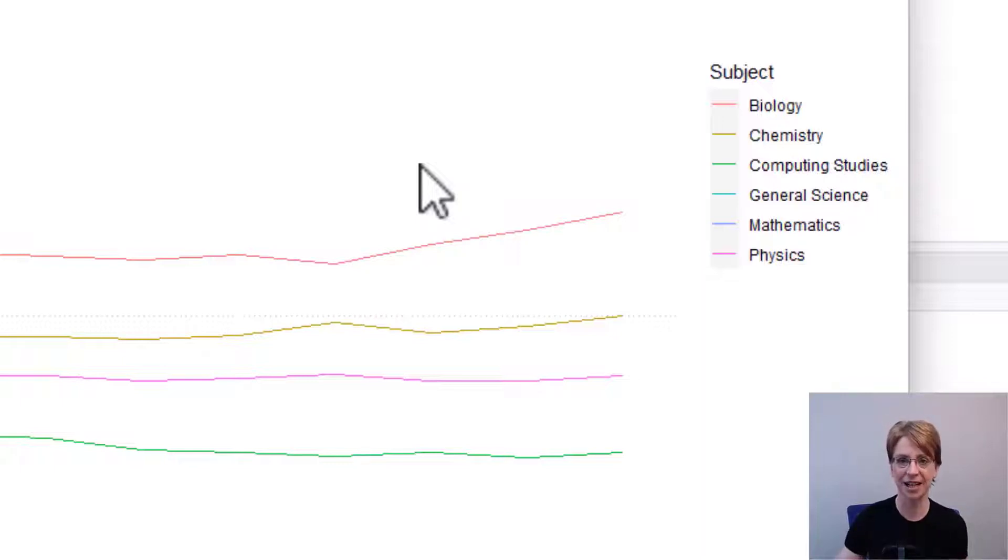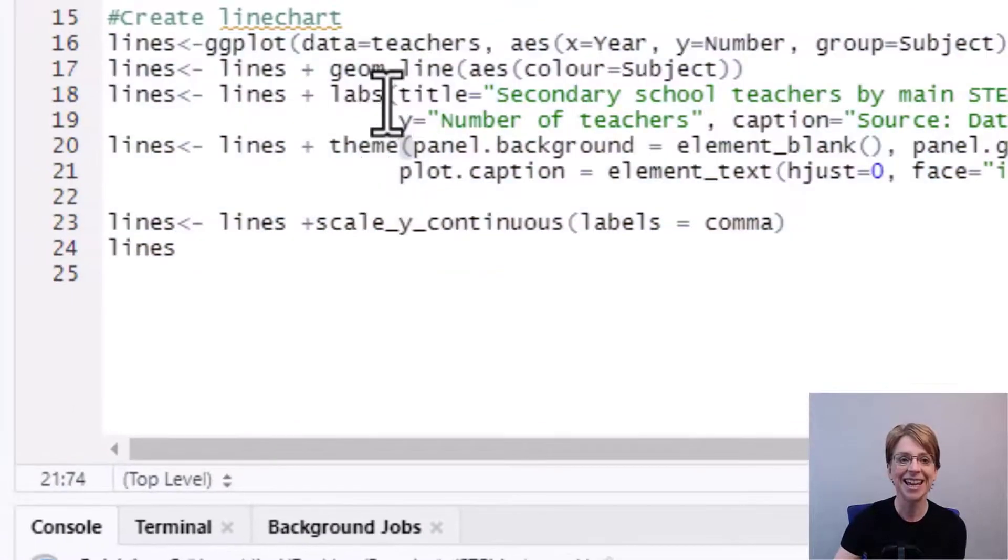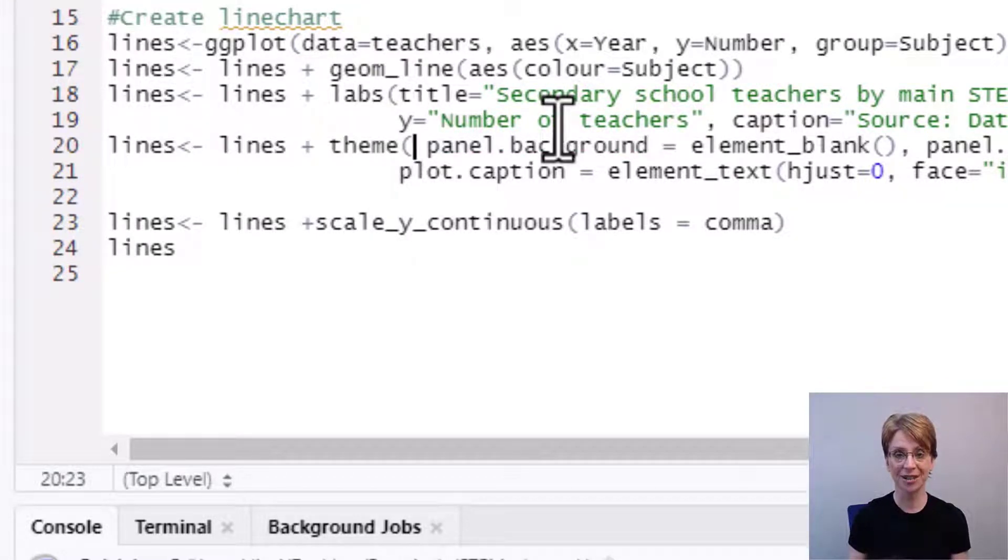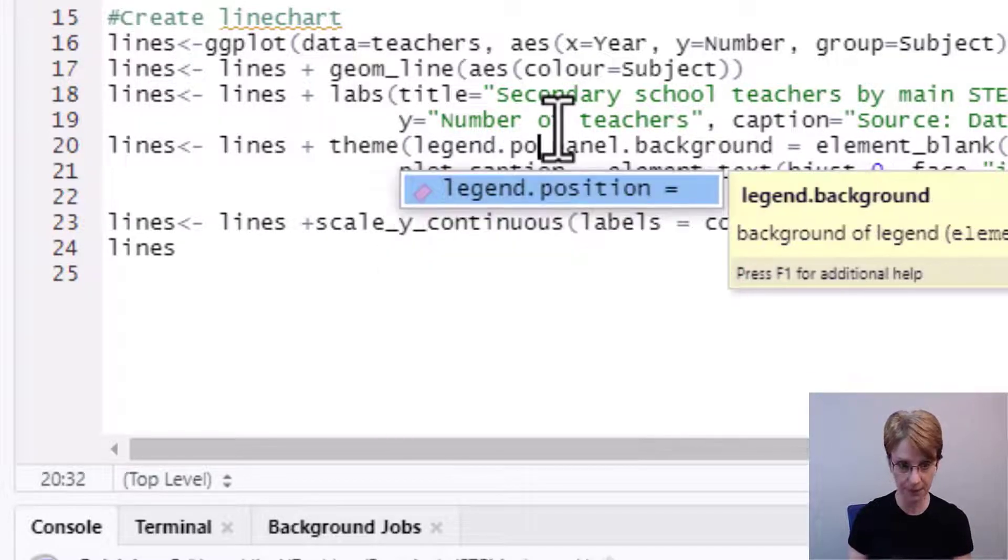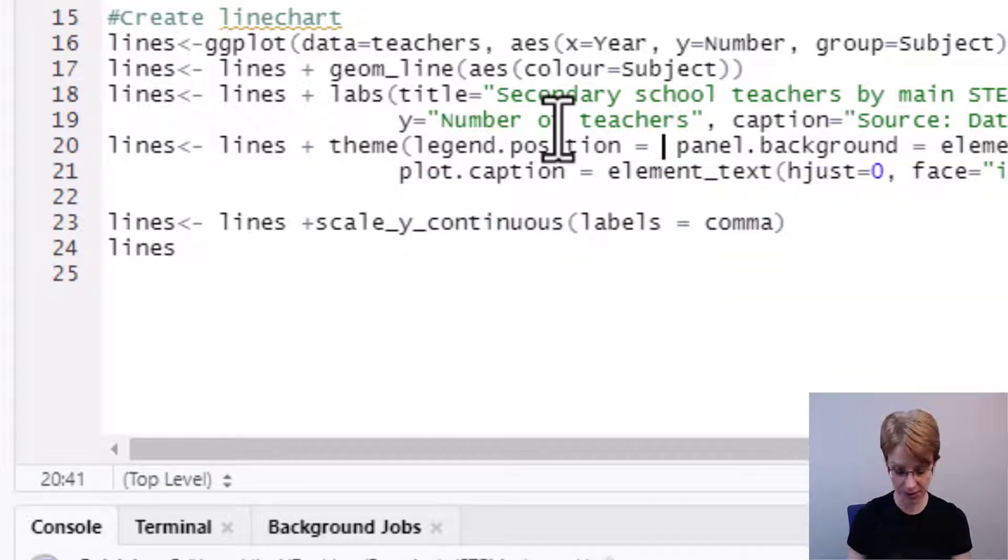In this scenario if we go back into our code inside the theme section to remove the legend all I need to do is type legend.position equals inside double quote marks none come outside my double quote marks and put a comma.